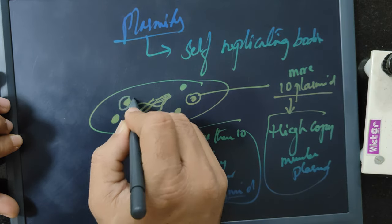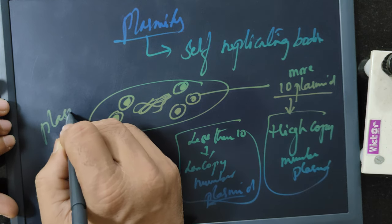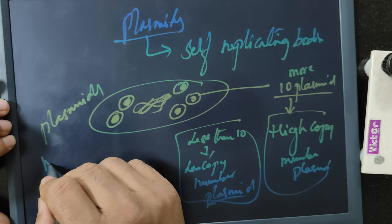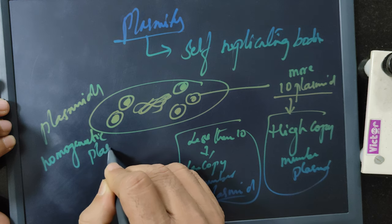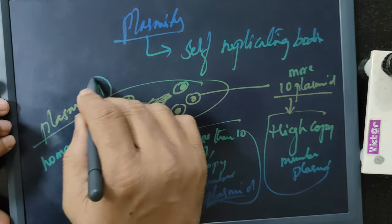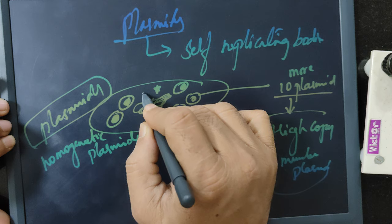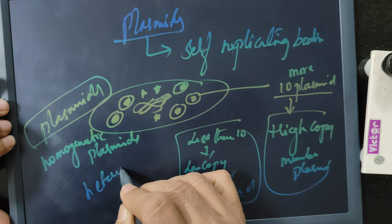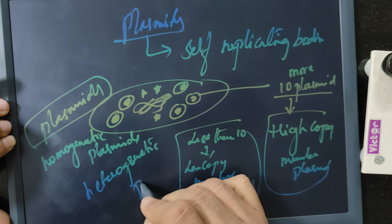If the plasmids in a bacterial cell are the same type, such plasmids are called homogenetic plasmids. If the plasmids are of different types, then such plasmids are called heterogenetic plasmids.